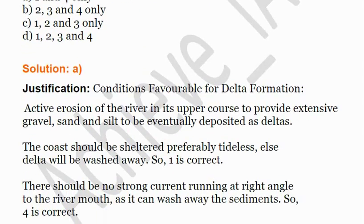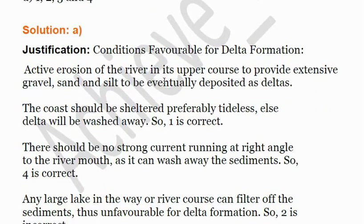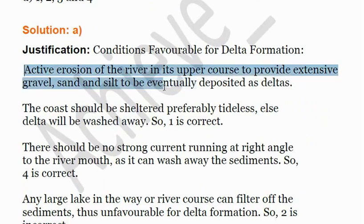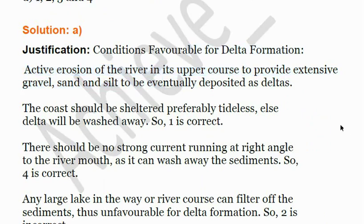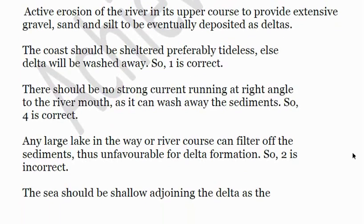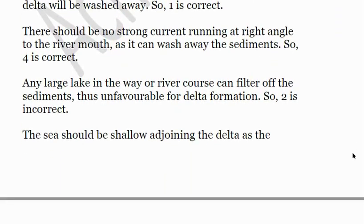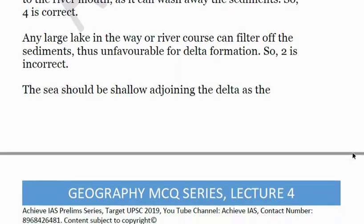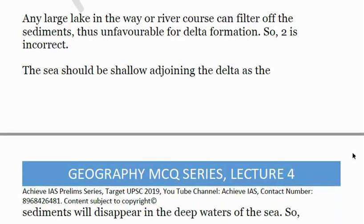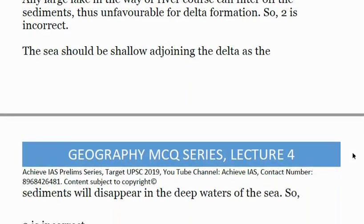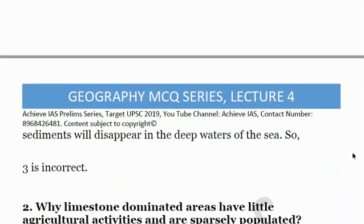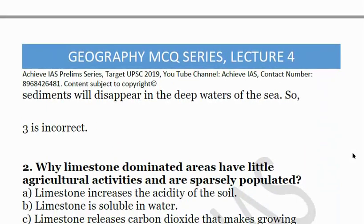The conditions favorable for delta formation are: active erosion in the river's upper course to provide extensive gravel, sand, and silt to be deposited as deltas; the coast should be sheltered, preferably tideless; there should be no current running at right angles; any larger lake in the way of the river will filter off sediments; and the sea adjoining the delta should be shallow, as sediments will disappear in deep water.